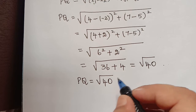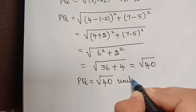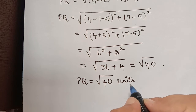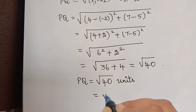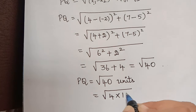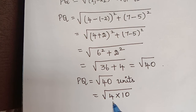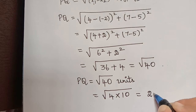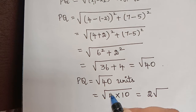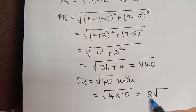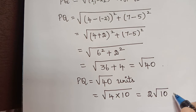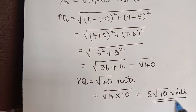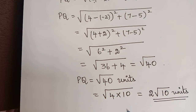So the distance between points P and Q is equal to square root of 40 units. We can further simplify this: square root of 40 can be written as square root of 4 multiplied by 10. The square root of 4 is 2, so this becomes 2 times square root of 10. Therefore, the distance between P and Q is 2 square root of 10 units.